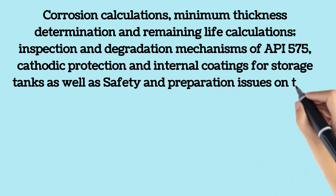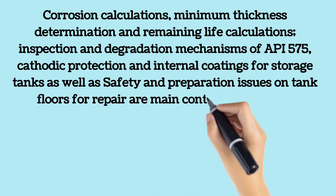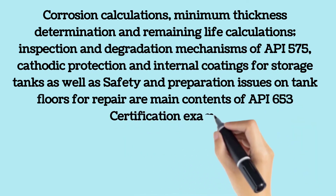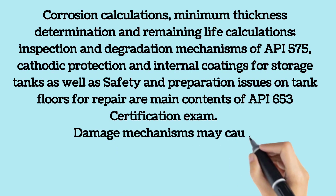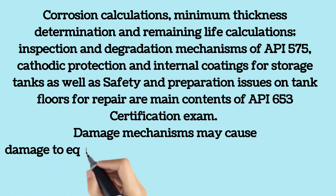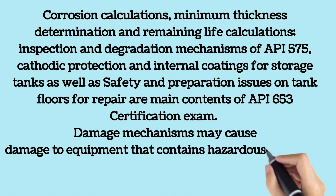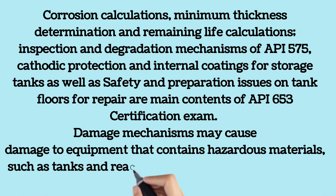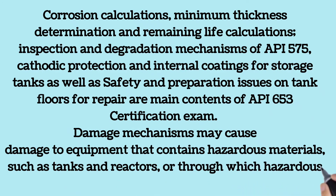Damage mechanisms may cause the failure of process equipment resulting in loss of containment or impaired operability. They may cause damage to equipment that contains hazardous materials, such as tanks and reactors, or through which hazardous materials flow, such as piping, valves and pumps. Damage mechanisms may also affect utilities and support systems whose failure may result in a process safety incident.